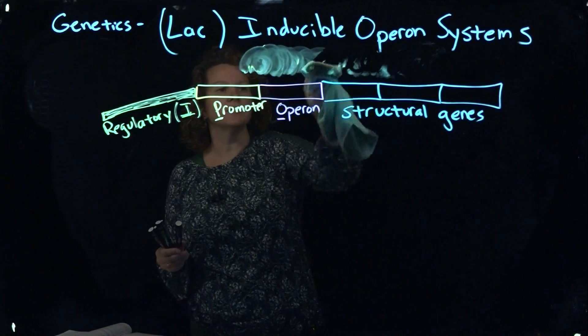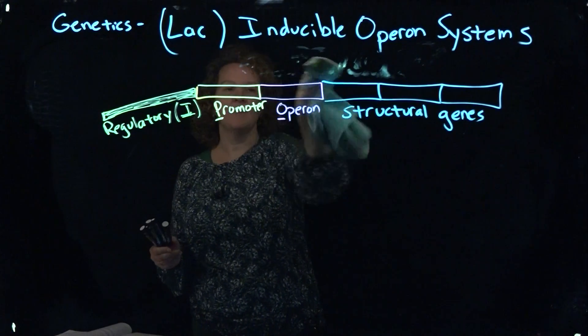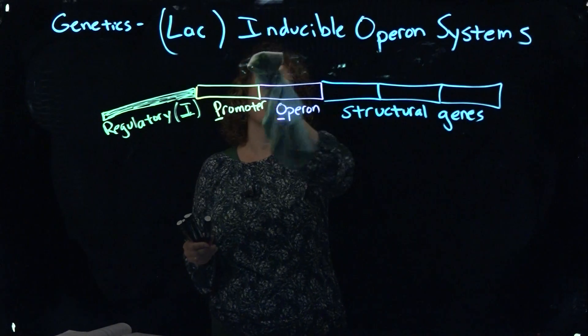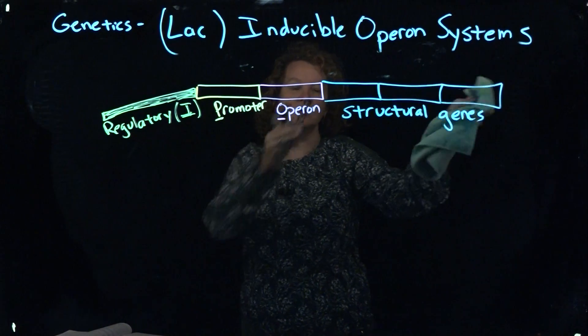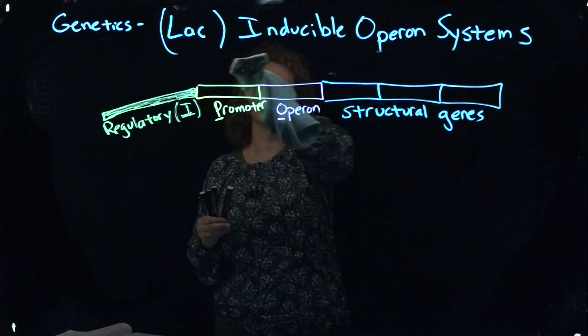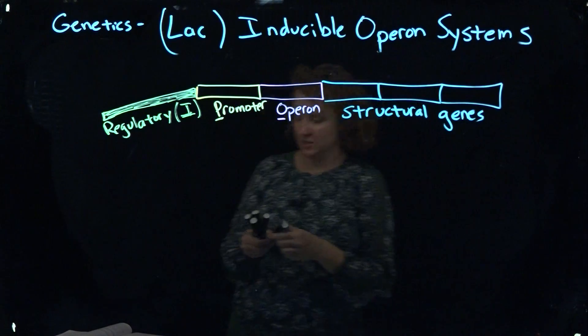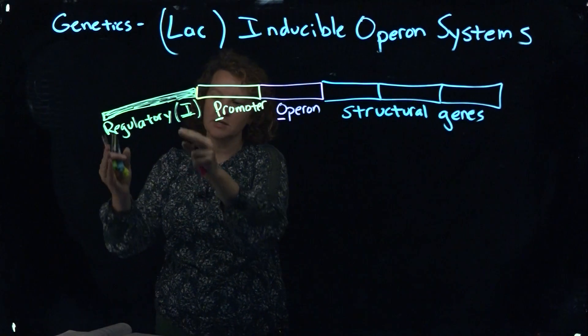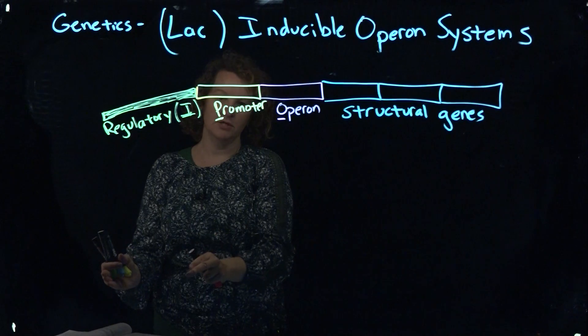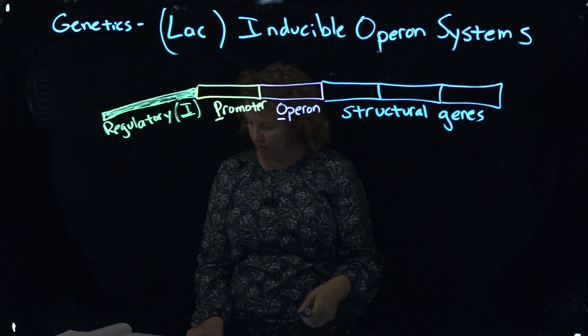So the repressor is synthesized back at that I region there. That's where the information is, because you can't put it in here, because that's where the control is, so you need to make that repressor independent of that. So the genes that synthesize that would go through transcription and translation over here, and you make something called a repressor.